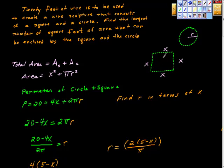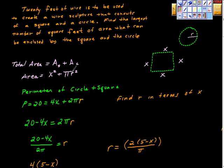The first thing I'm thinking about is the fact that we only have 20 feet of wire. The total area here is the total area of the square plus the total area of the circle. The area of a square is x times x, therefore x squared, and the area of a circle is πr². That gives us a problem because we're in single variable calculus and yet we have the variable r and the variable x.